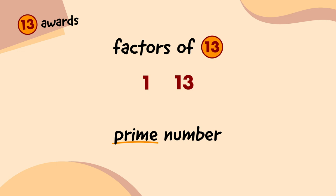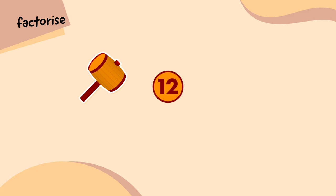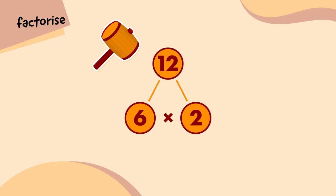Prime numbers are the fundamental building blocks of maths that make up all the other whole numbers. Let's look at the number 12 again. If I use my hammer, I can factorize 12 — or break it down into its factors. For example, 2 times 6. 2 times 6, or 6 times 2, is still equal to 12, but just expressed differently. Can I break this down any more?